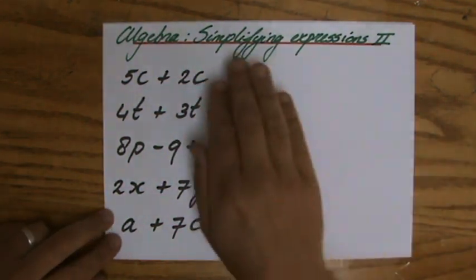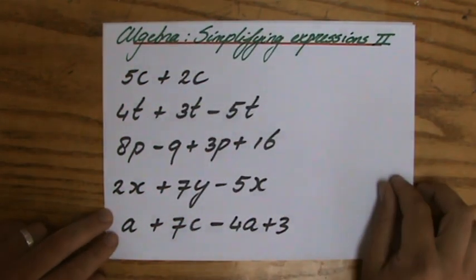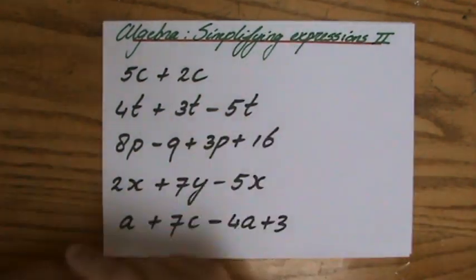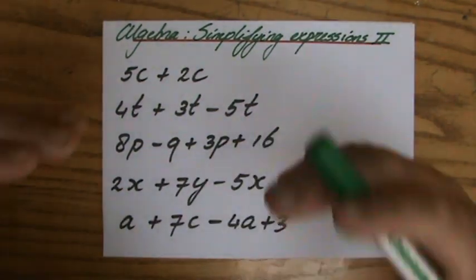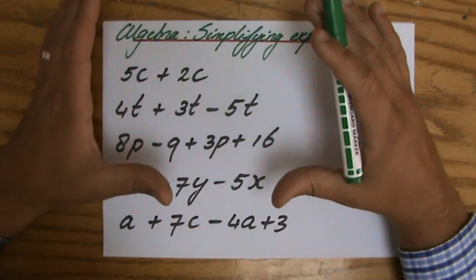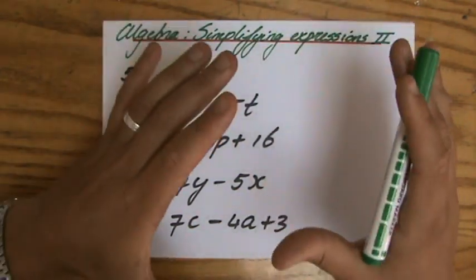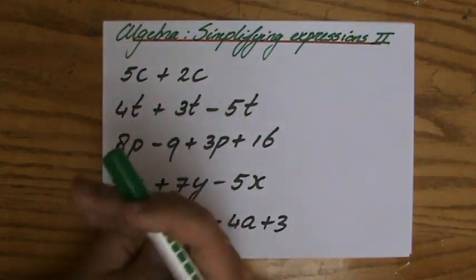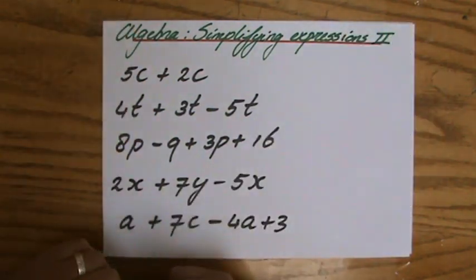Welcome to this second video involving simplifying expressions. We have said simplifying expressions, that is, combining the like terms. And what are like terms? Those are terms where you have the same variables.